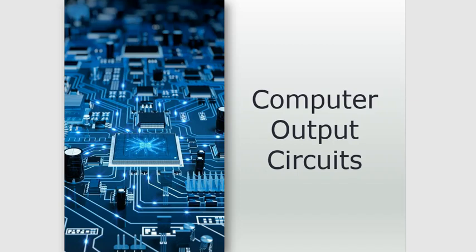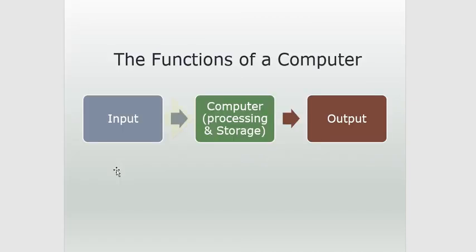In the last video we talked about how computer input circuits work. In this video I want to discuss computer output circuits. We know that an input signal comes into the computer and triggers it to process, and then that computer generates an output signal — basically a voltage signal that will turn on or off or control some type of actuator such as a motor, solenoid, or relay, possibly even turning on and off a light or a heating element. It essentially allows the computer to control some kind of a device.